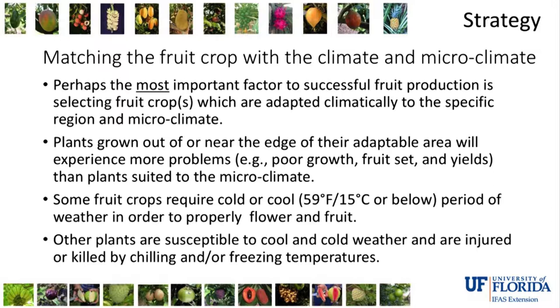You want to pick a fruit crop that matches the particular specific site where you're going to plant it. Plants grown near their edge of adaptability don't grow well, may not set fruit well, and yields aren't going to be very good. Some crops require a cool period in order to flower and fruit. Drought can actually replace the requirement for cool in some crops, but not all. In tropical areas, you have different micro niches of climate depending on elevation, so you can plant different crops at different elevations.